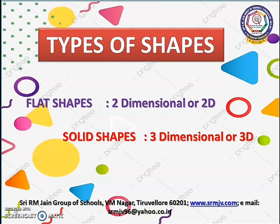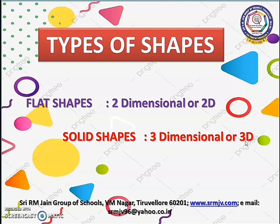Children, shapes are formed by straight lines and curved lines. We have two types of shapes. They are flat shapes and solid shapes. Flat shapes are also known as two-dimensional or 2D shapes. Solid shapes are also known as three-dimensional or 3D shapes.